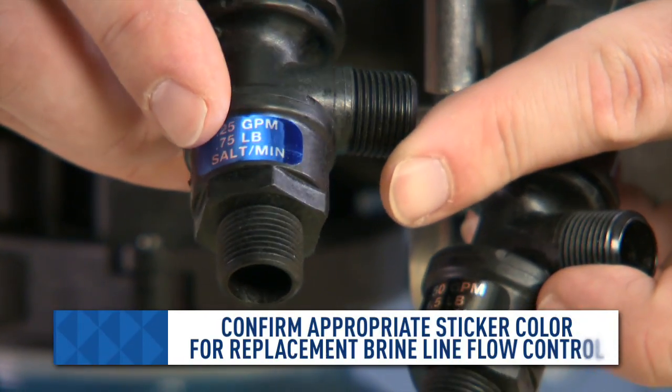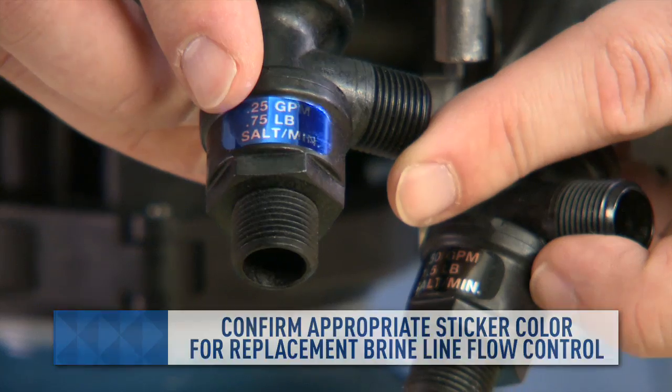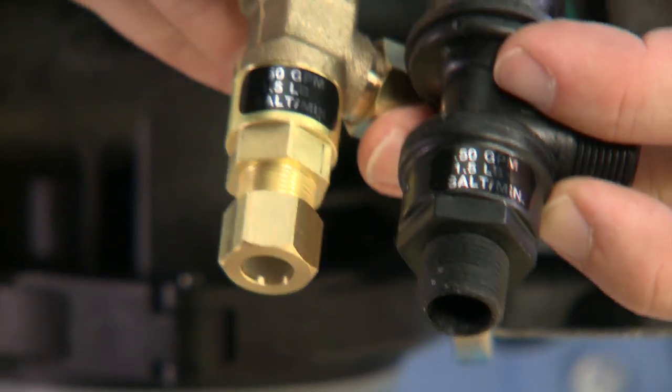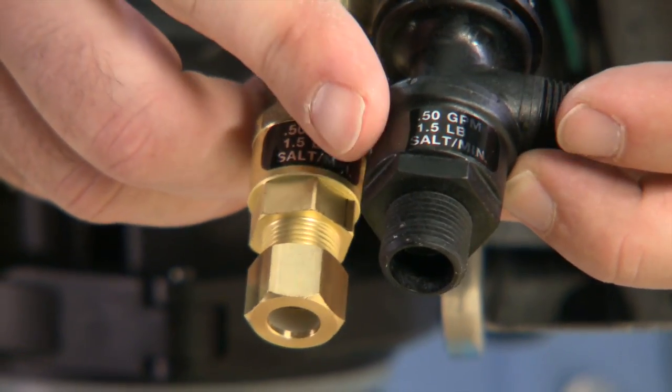This other unit has the blue tag identifying it as a 0.25 gallon per minute brine line flow control. Your unit may also have a brass valve for this model. So long as the brine line flow controls match, you can swap between the two.